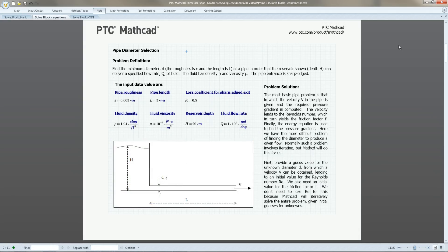Now, let's look at a real-world problem. We want to find the minimum pipe diameter in a reservoir to deliver a specified rate of flow. We need to account for pipe length and roughness, flow rate, reservoir depth, and fluid properties.